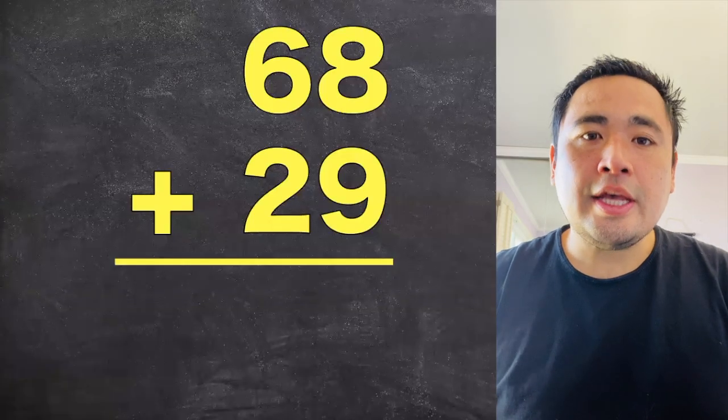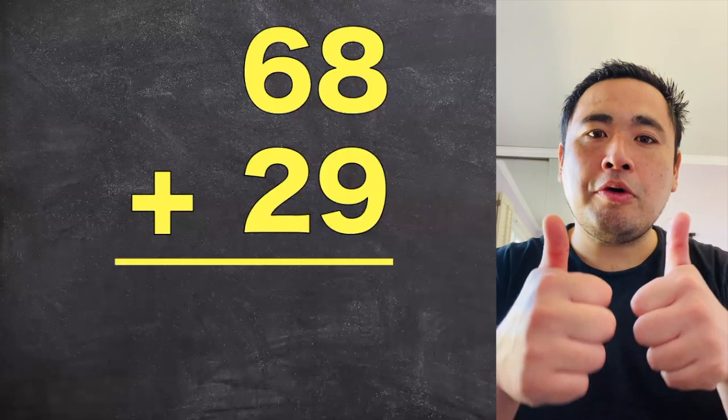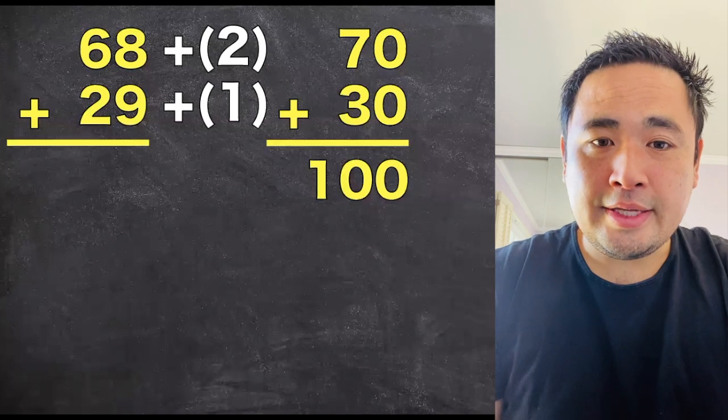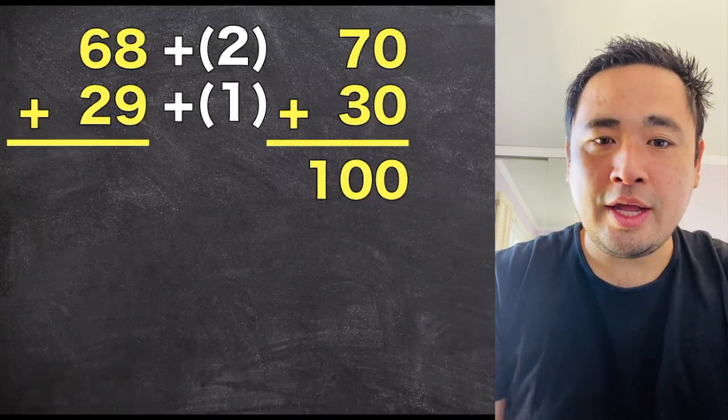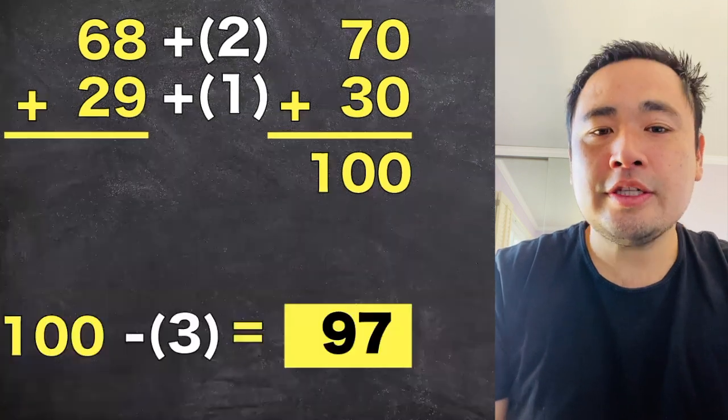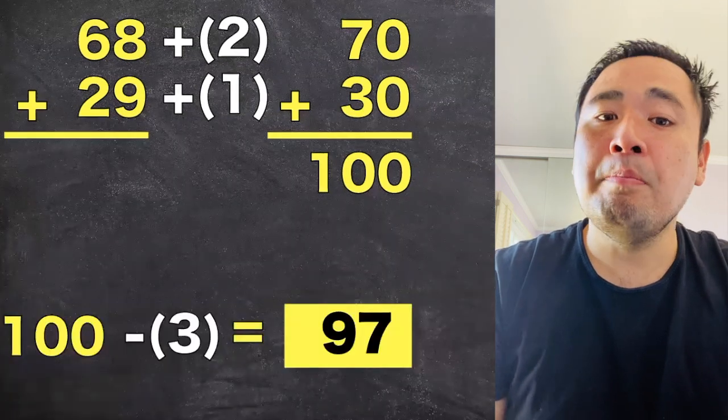Now in some instances, it might be easier to round up both numbers. Like in this example, add 2 to the 68, make 70. Add 1 to the 29, make 30. 70 plus 30, 100. Subtract the 3 back, 97. Boom!